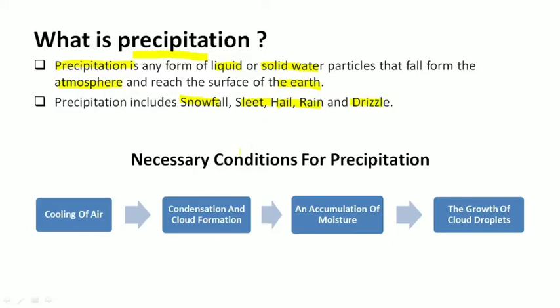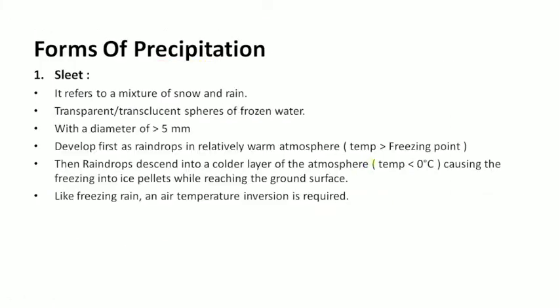What are the necessary conditions for precipitation? The first condition should be evaporation. After ascending of air, cooling of air takes place in the atmosphere and condensation takes place. You also see the formation of clouds in the atmosphere, and in the clouds moisture is accumulated. After the accumulation of moisture, the growth of cloud droplets increases to a significant size and rainfall starts falling, or the precipitation starts taking place. So these are the necessary conditions for precipitation.